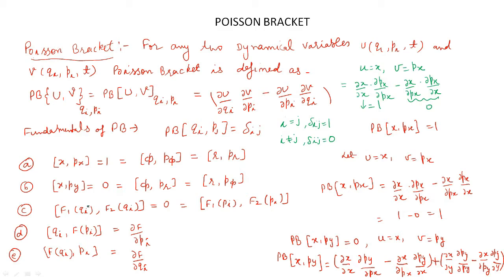When the generalized momenta component and the generalized coordinate are different, the value will be 0. Also, when two functions share the same generalized coordinates, their Poisson bracket is 0. Another property is that {qi, f(pi)} can be written as del f / del pi, and similarly {f, qi} with pi equals del f / del qi.